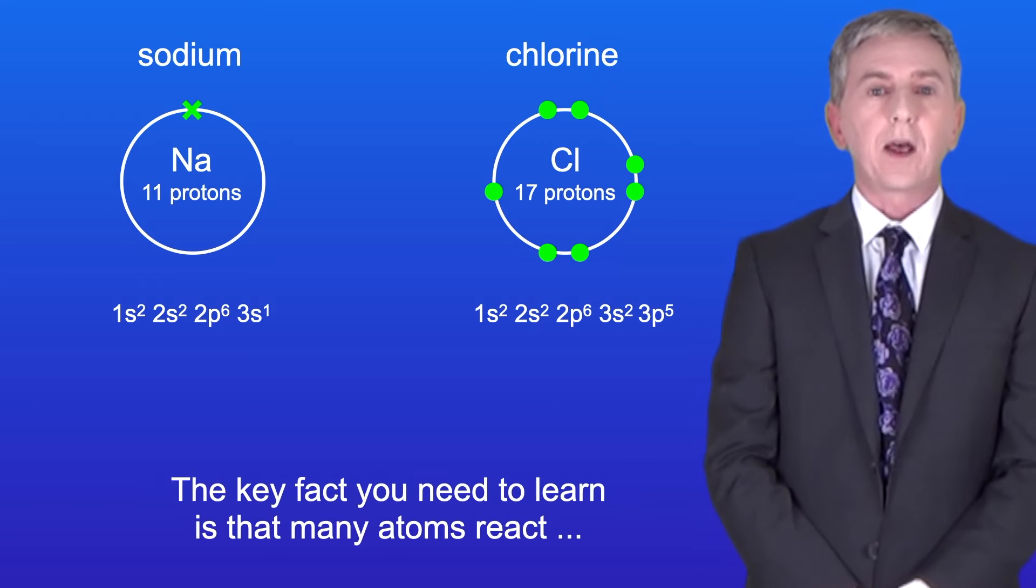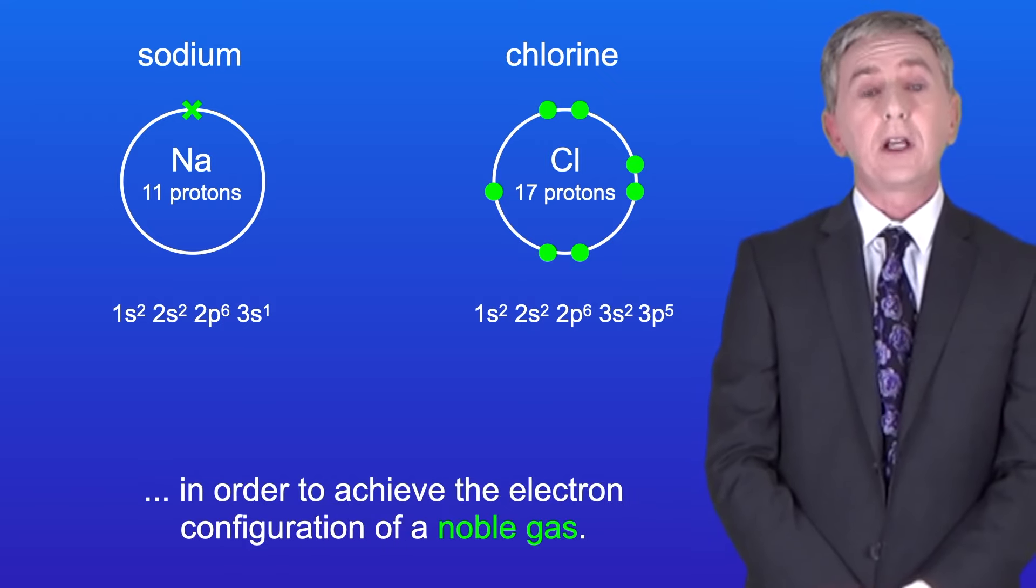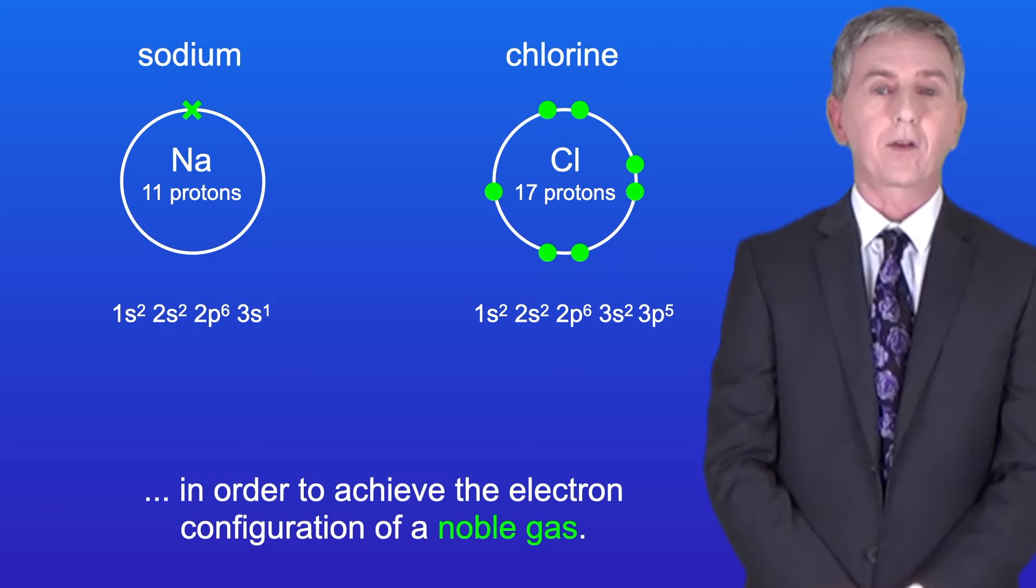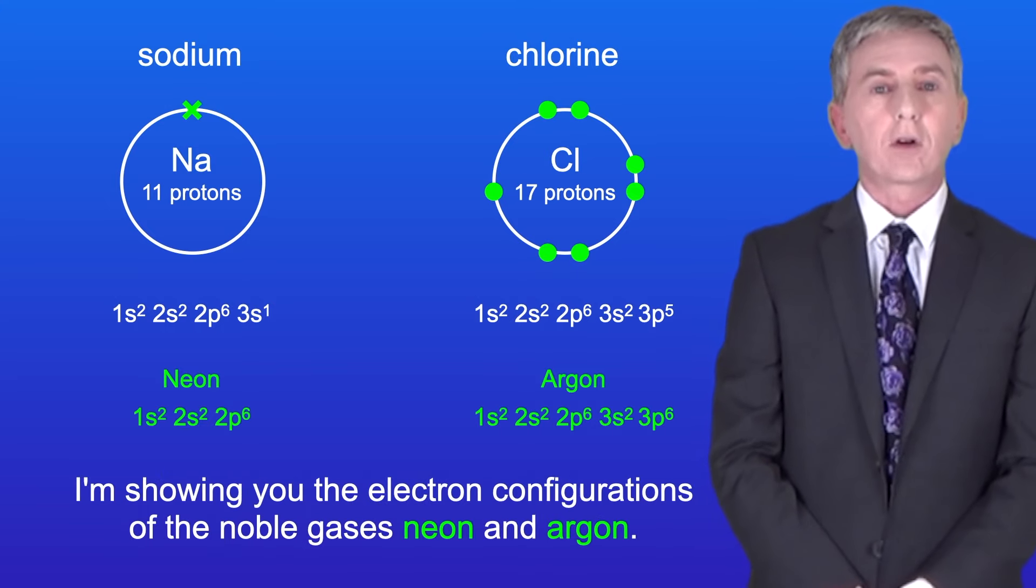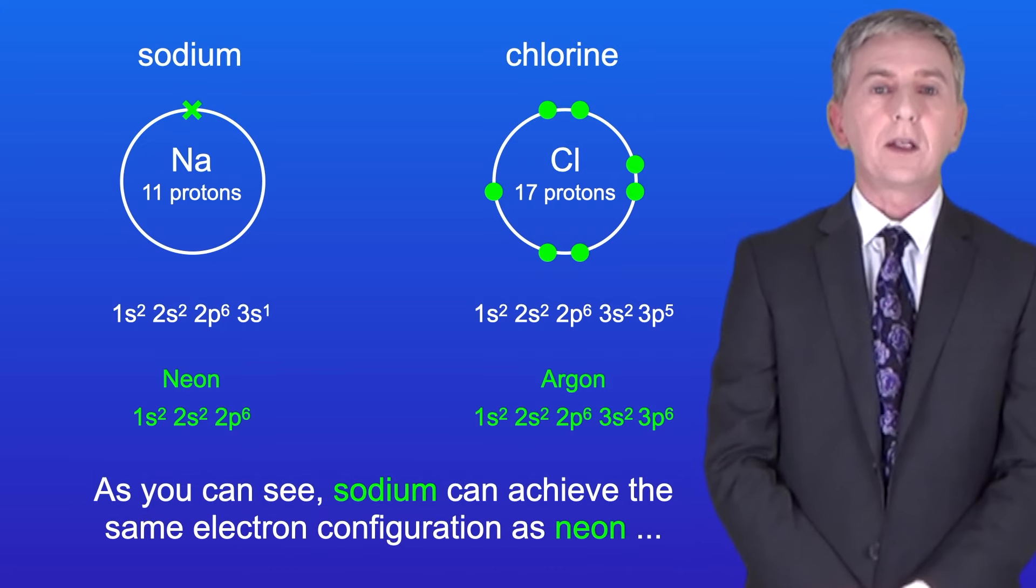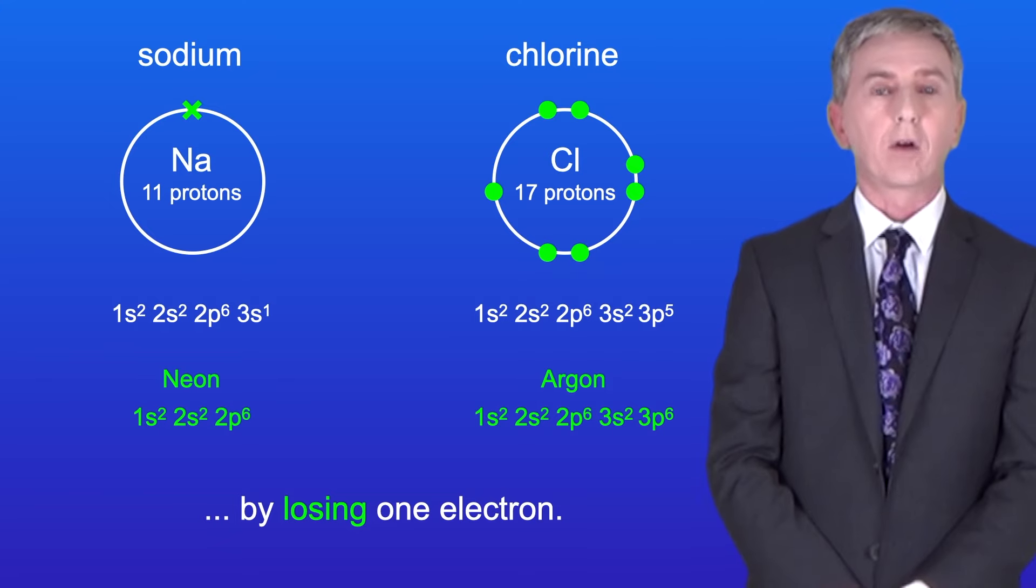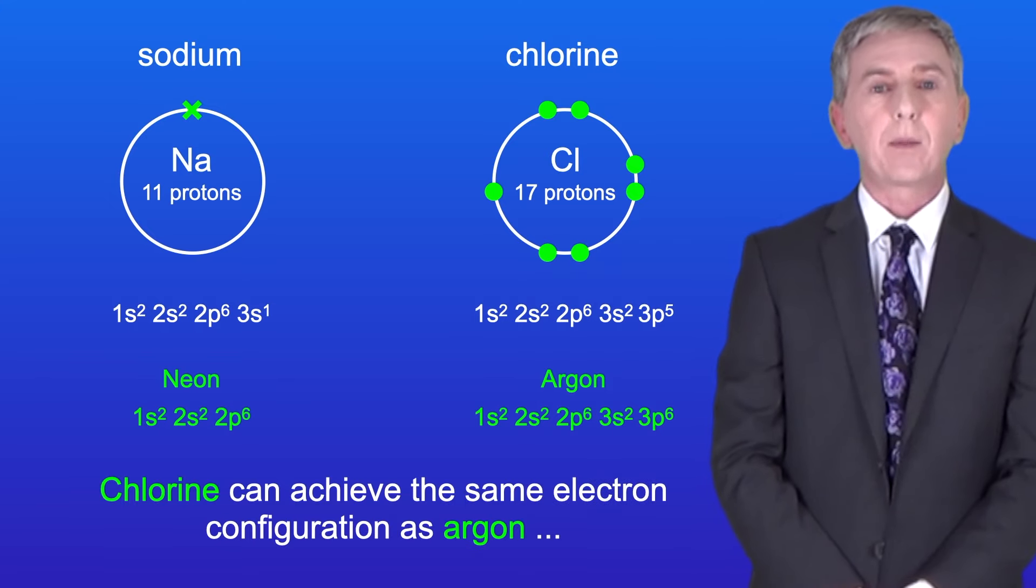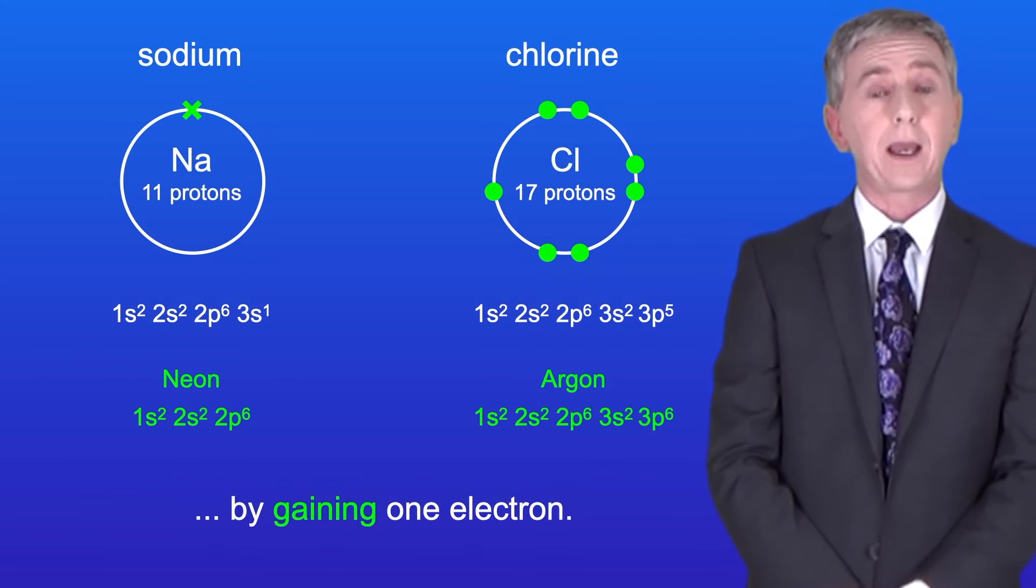Now the key fact you need to learn is that many atoms react in order to achieve the electron configuration of a noble gas. I'm showing you the electron configurations of the noble gases neon and argon. As you can see, sodium can achieve the same electron configuration as neon by losing one electron, and chlorine can achieve the same electron configuration as argon by gaining one electron.